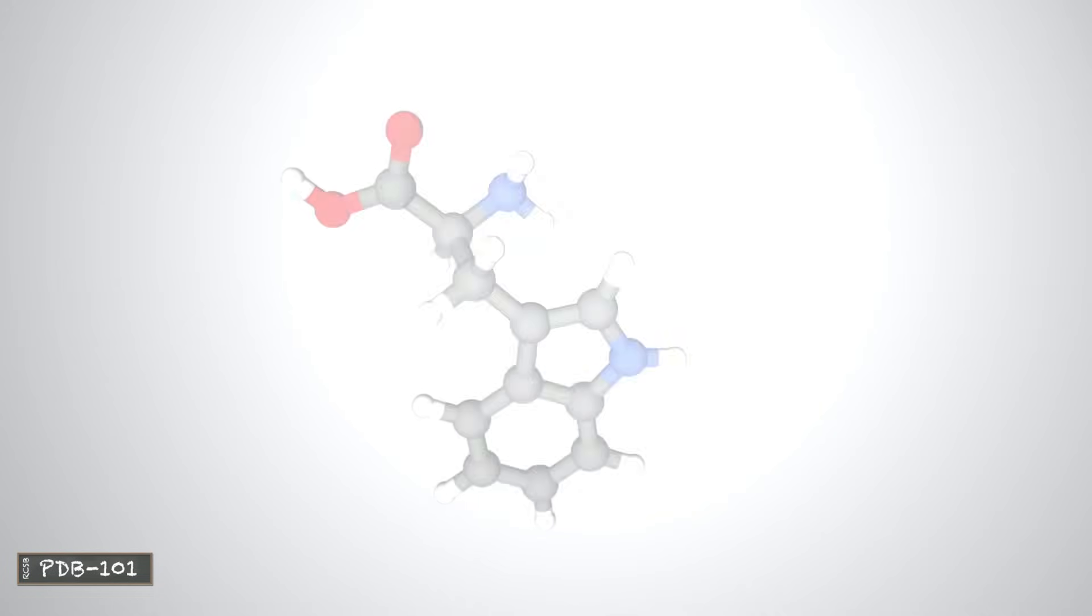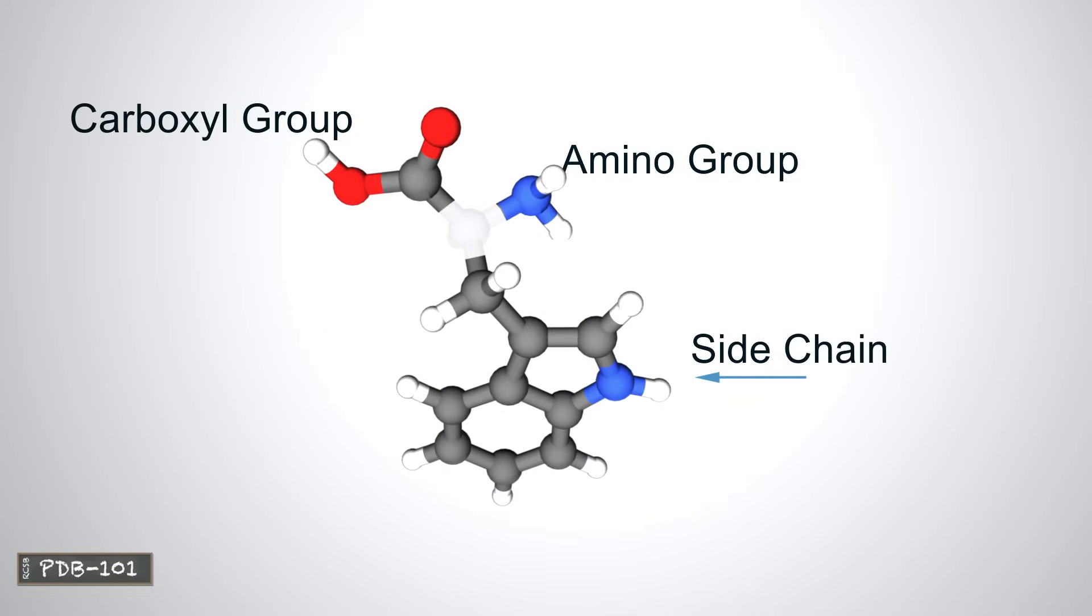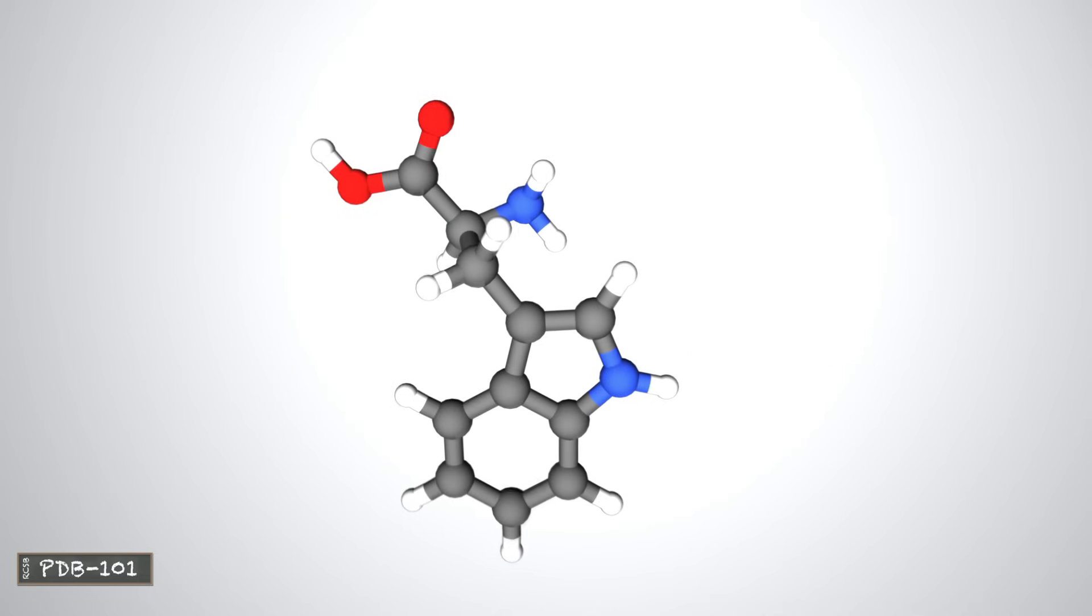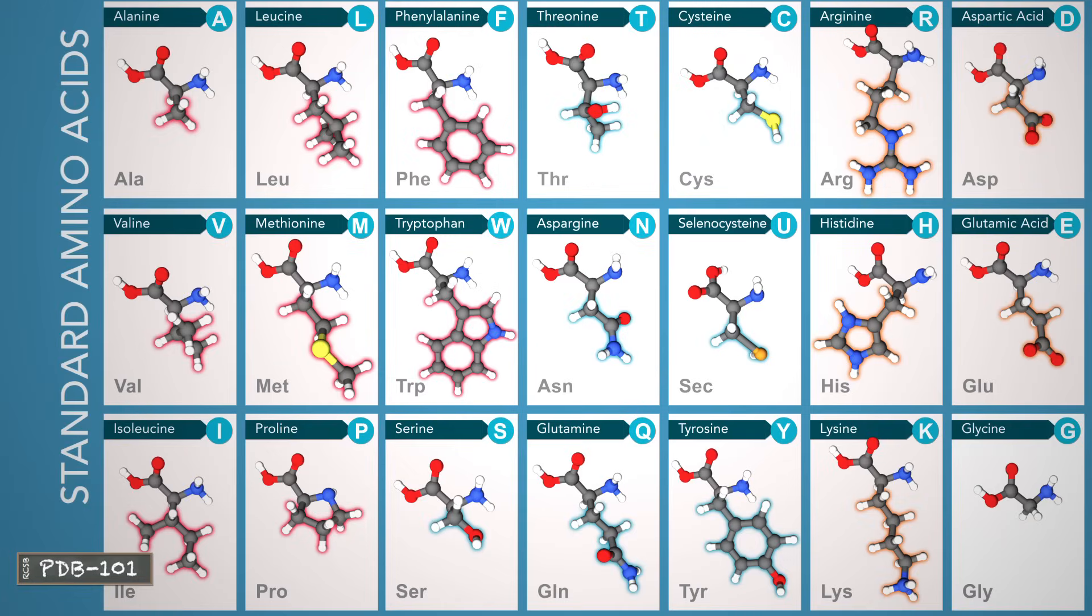These atoms form an amino group, a carboxyl group, and a side chain, all attached to a central carbon atom. The side chain determines an amino acid's properties and is the only part that varies from amino acid to amino acid.